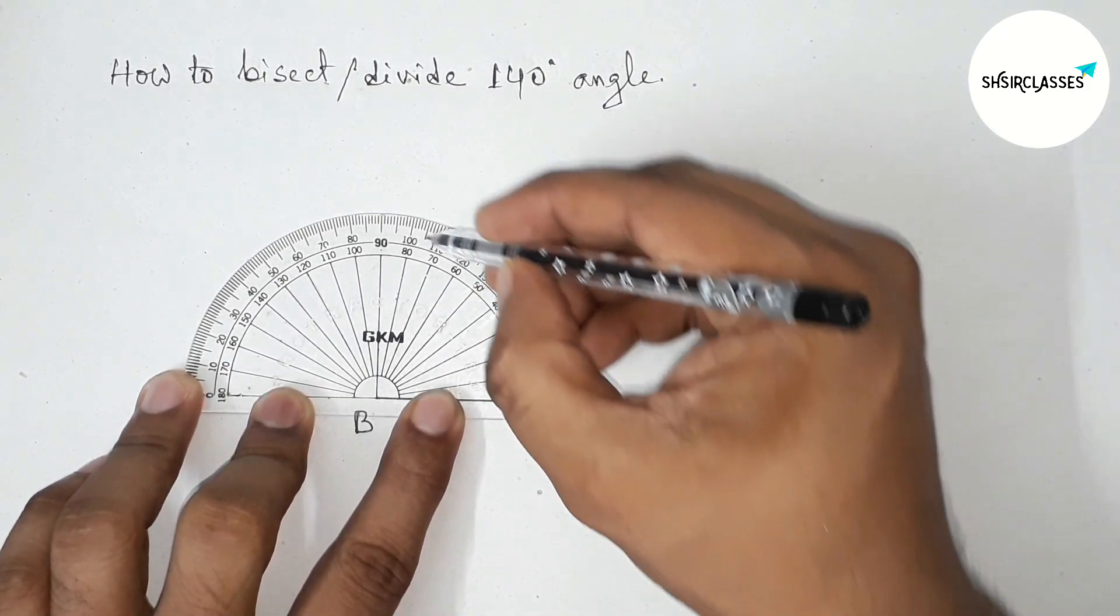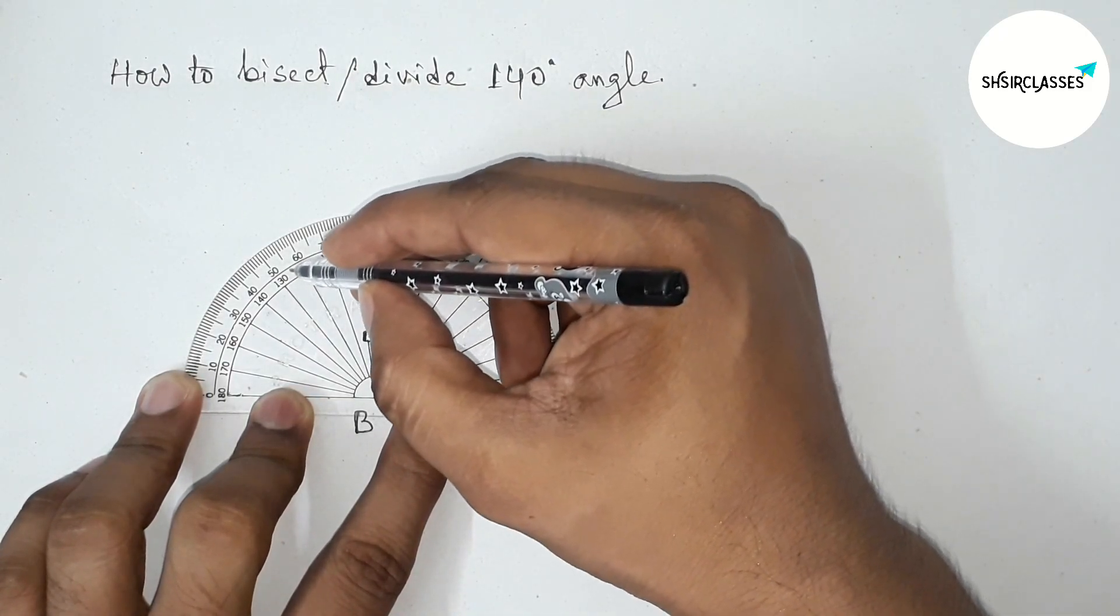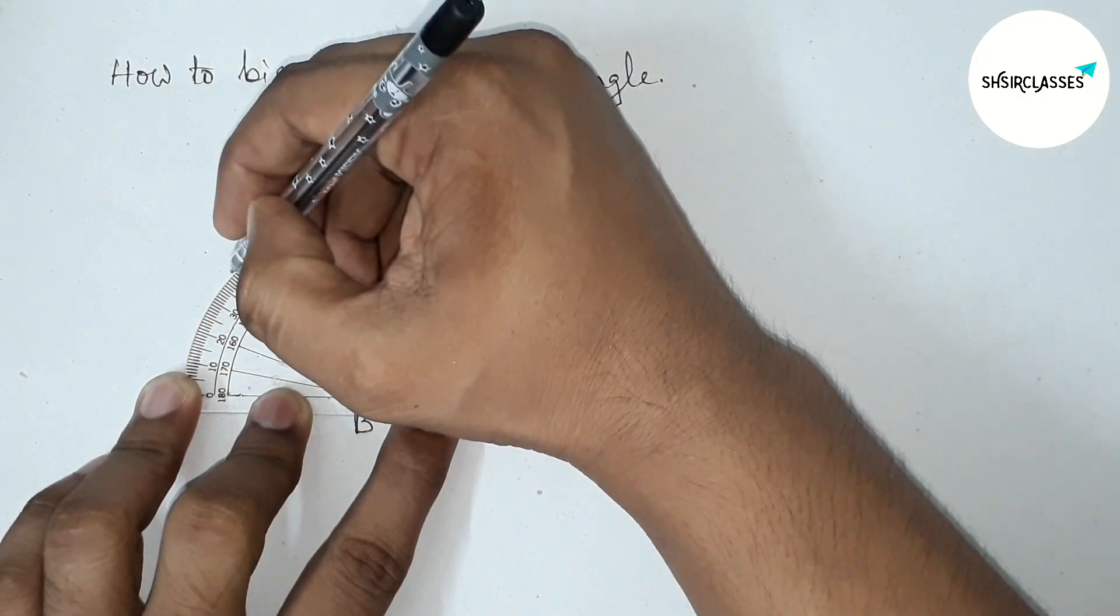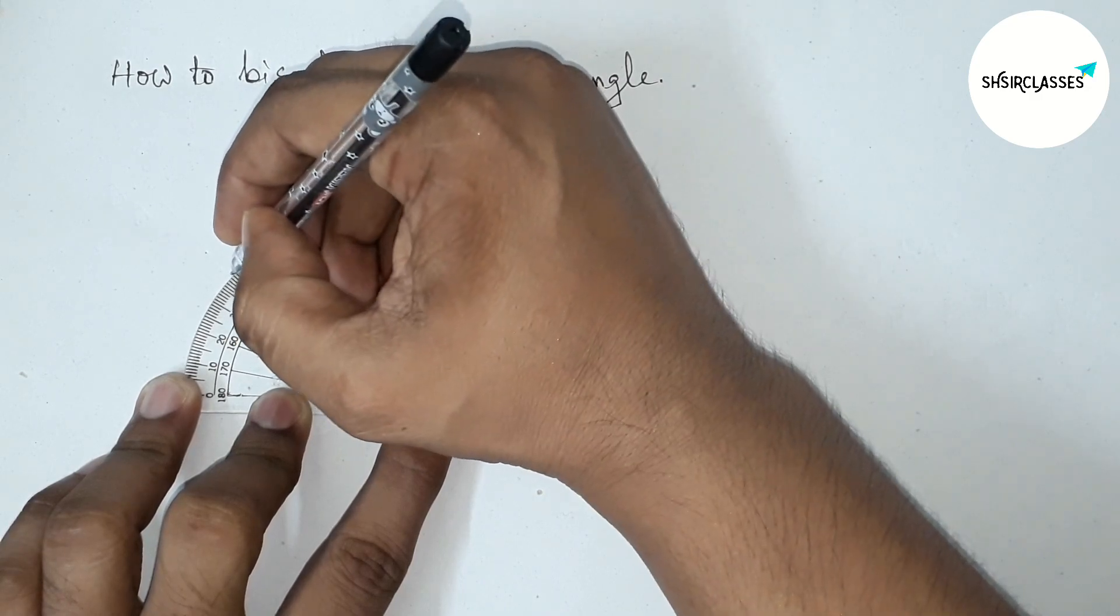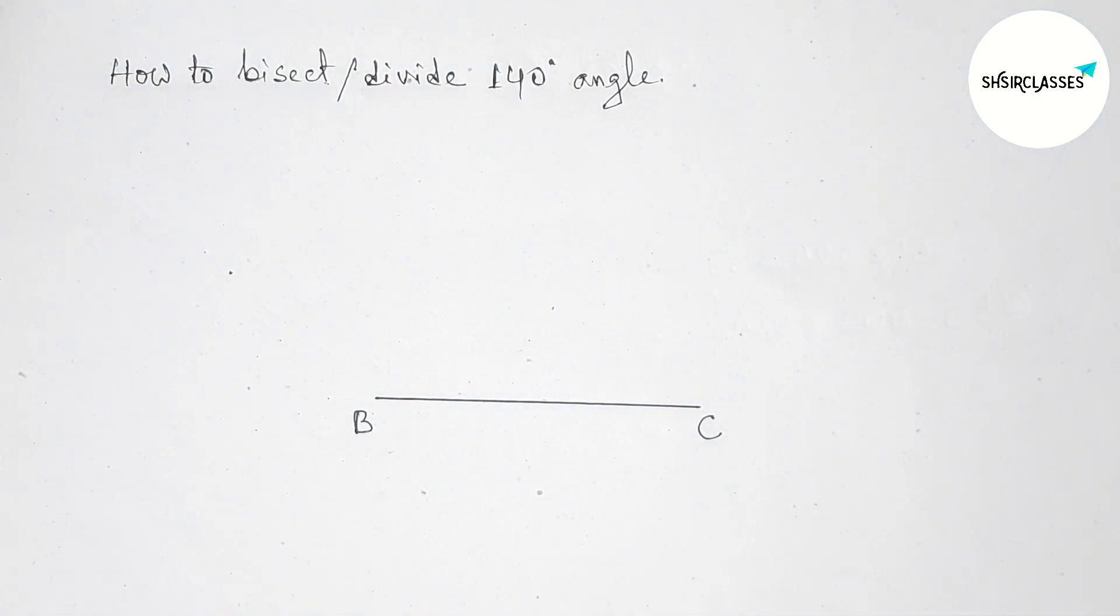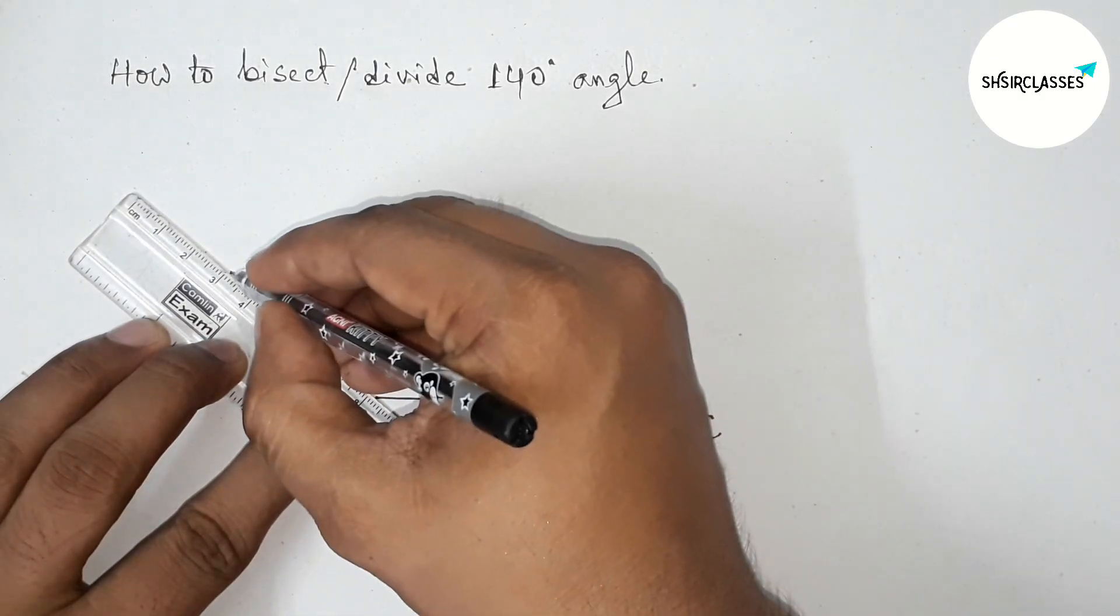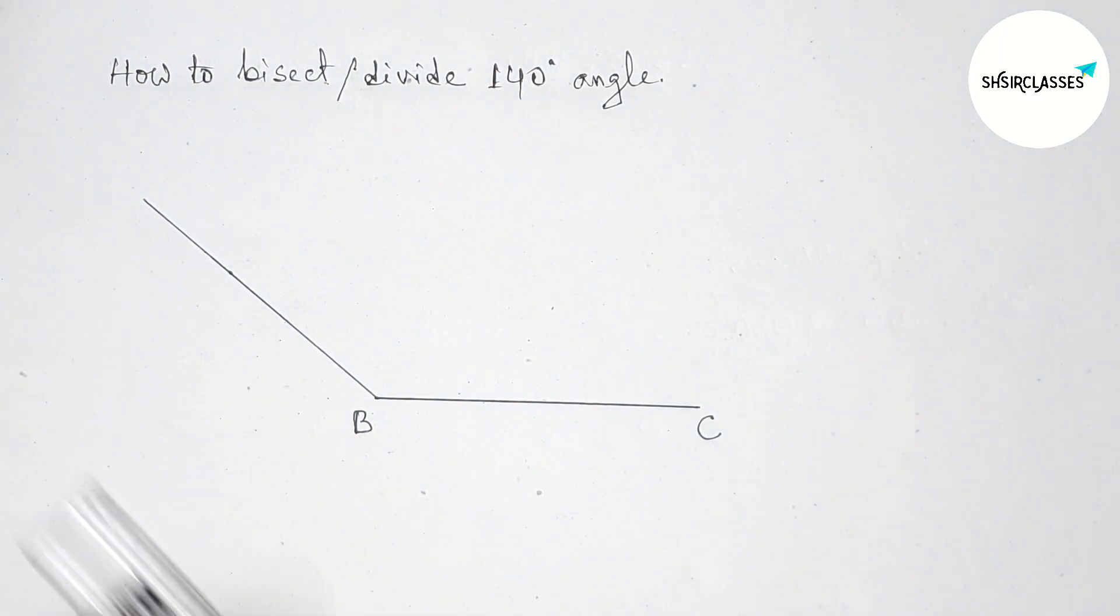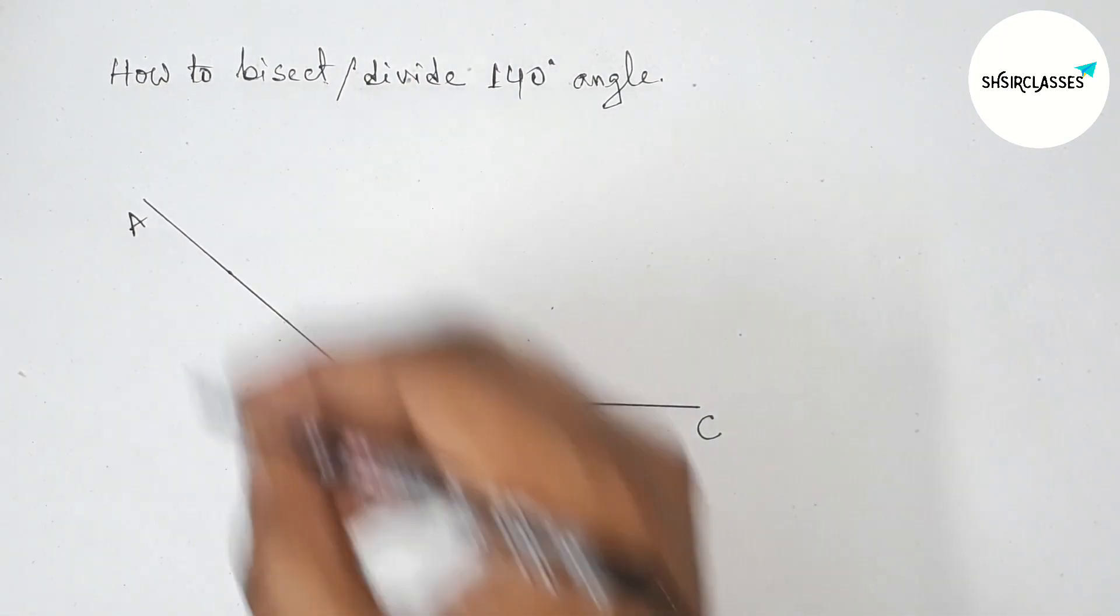Perfectly, then counting - so this is 90, 100, and this is 140. So first marking here 140 degree, so this is 100, 140. Then joining this line to get here 140 degree angle. Okay, so now taking here point A, so angle ABC 140 degree.